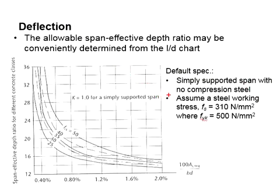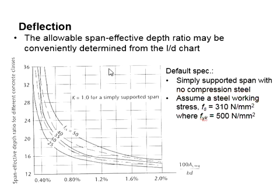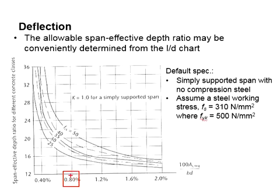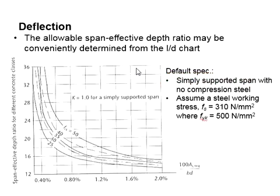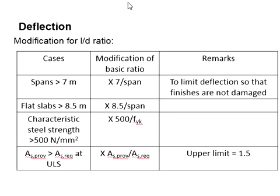The chart by default is meant for a simply supported span without compression steel, and the steel working stress is fyk equals to 500 N/mm². To use this chart, compute rho first and determine the concrete strength. Draw a straight line upward from the rho value to touch the relevant concrete strength curve, say C25, then read across to the y-axis to get the L/D ratio. If the member is other than simply supported, where k is not equal to 1.0, multiply by the k value for the respective condition.